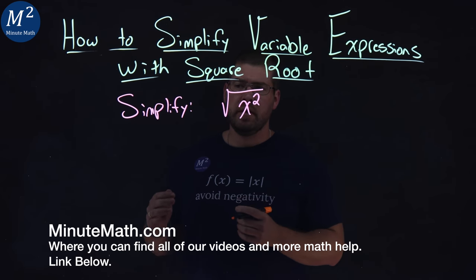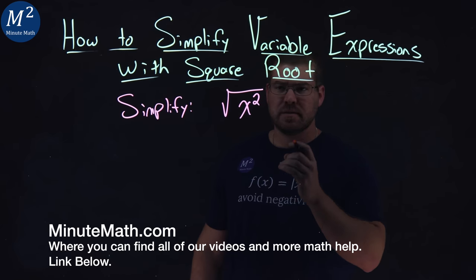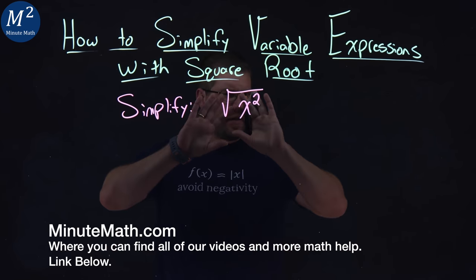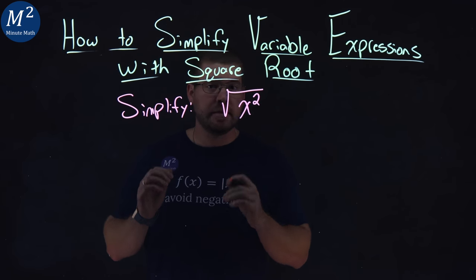We're given this problem here: Simplify the square root of x squared. Some of you might find this very easy and some more difficult. Let's break it down.